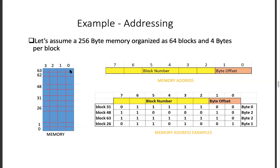You have 256 bytes, so how many address bits do you need? If it's byte-addressable, you need 8 bits. So your memory address is 8 bits wide. How many bits do you need to find the byte index? There are 4 bytes per block, so you need 2 bits for the byte offset. For the block number, log₂(64) = 6 bits. So byte offset is the lower 2 bits and the higher 6 bits are your block number.